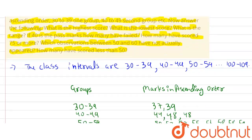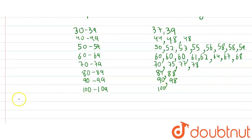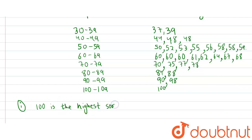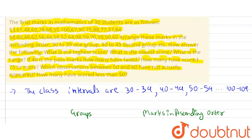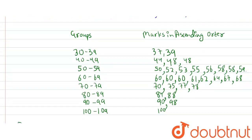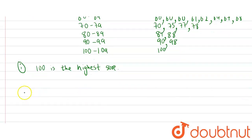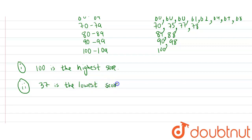The first question: what is the highest score? We can see that the highest score is 100. The second question: what is the lowest score? The lowest score is 37.